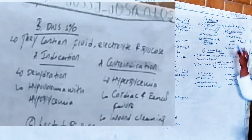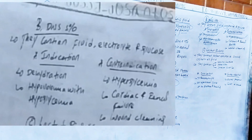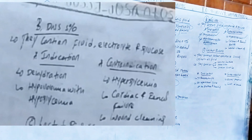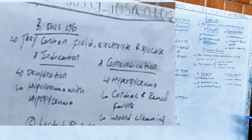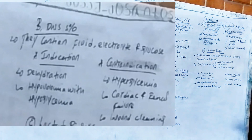What are the contraindications for D5NS? The first is hyperglycemia — elevated blood glucose levels. The second is cardiac and renal failure. D5NS cannot be used for wound cleaning because it contains glucose, and glucose is favorable for bacterial growth.